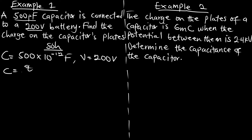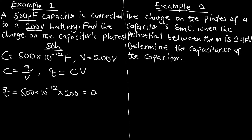We are interested in the charge, and charge equals capacitance multiplied by voltage: Q = C × V. So the charge is 500 × 10⁻¹² multiplied by 200, which gives us 0.1 × 10⁻⁶ coulombs, or 0.1 microcoulombs. This is the charge stored on the capacitor's plates.